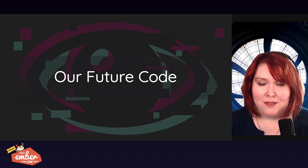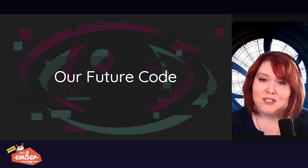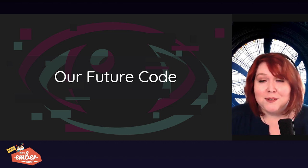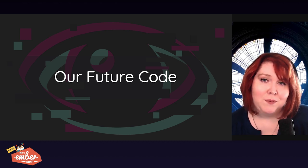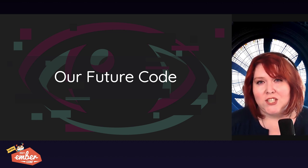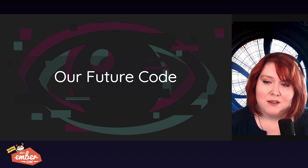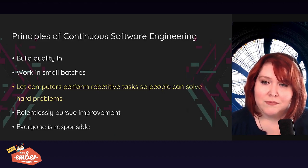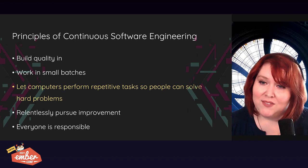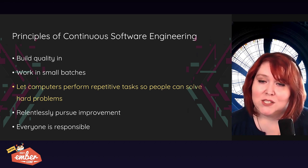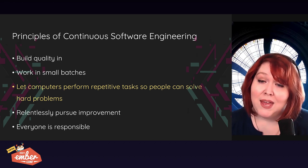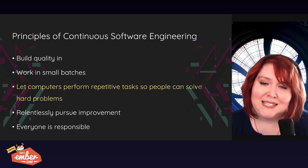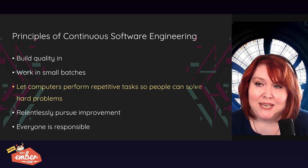We need to plan for the code we will write in the future, or we will be much more likely to make the same mistakes of our past. The way we wrote code yesterday is different from the way we'll write code tomorrow. What does our strategy need to include to prepare us for these unknown unknowns? We'll continue to follow the principles of continuous software engineering. One of these — letting computers perform repetitive tasks so people can solve hard problems — is what I want to focus on. Let's take a look at the way automation and accessibility can help.